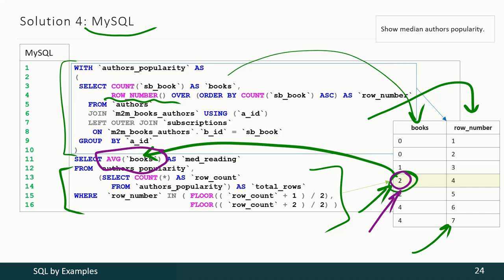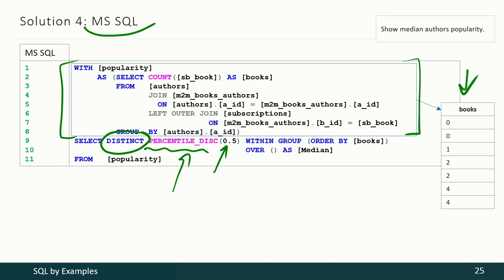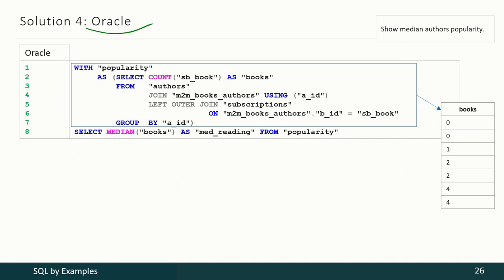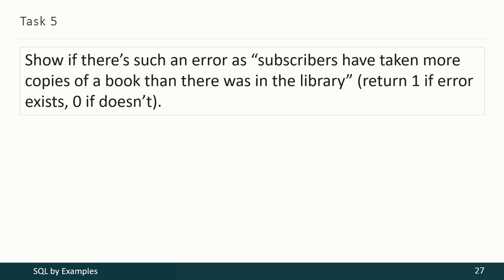The solution for Oracle is the simplest one. Once again we produce the information about how many books of each author were taken by subscribers, pass the data set to the MEDIAN function, and that function produces our final expected result.